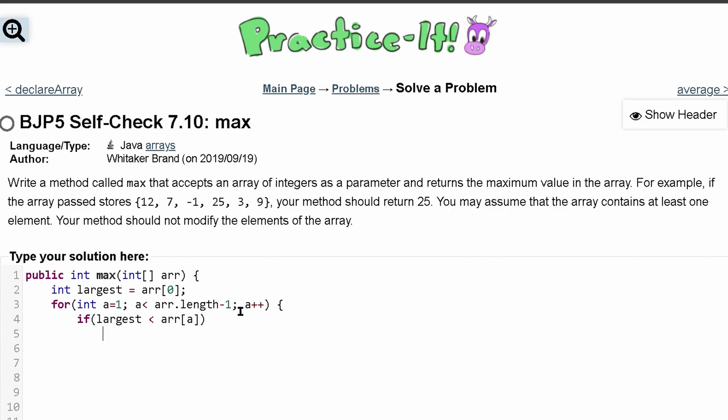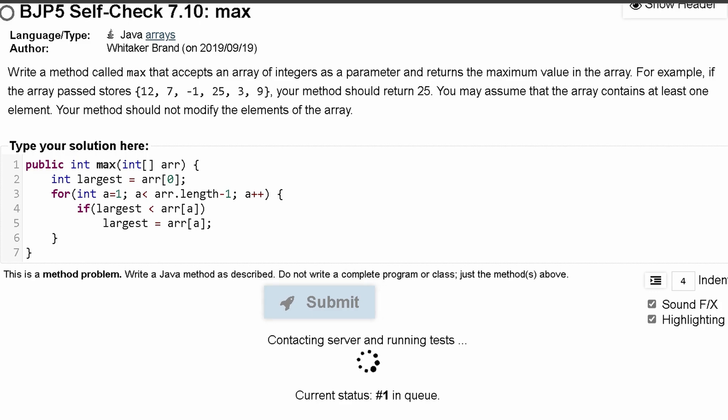we can be inside of here and set largest equal to this new value because it'll be the new highest value. So we can end this, end this for loop, and end the method and see how well it goes.